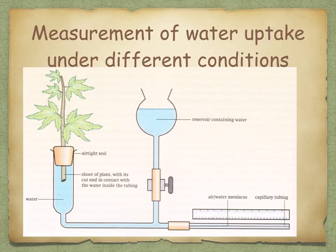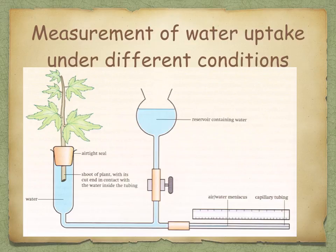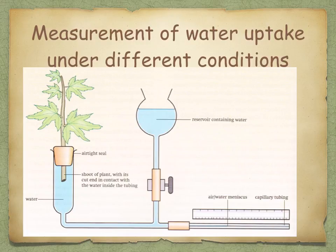It's very hard to measure transpiration directly because it's difficult to condense and collect all the water lost from the parts of the plant. However, we can measure the volume of water taken up in a given time by a leafy shoot. Because 99% of the water taken up by the plant is lost during transpiration, it's easy to estimate the transpiration rate — only 1% is actually used by the plant. So we can measure water uptake by the same shoot under different conditions.